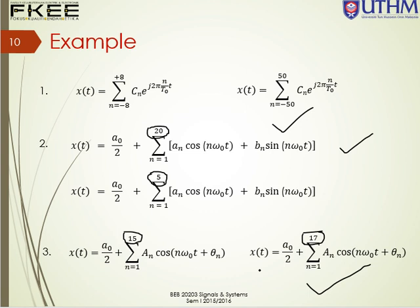That is Gibbs phenomenon. As a conclusion: as you add more and more frequency components into your equation, the sum of those frequency components gives a closer and closer representation of your periodic signal xt. Hopefully you understand — thanks for watching.